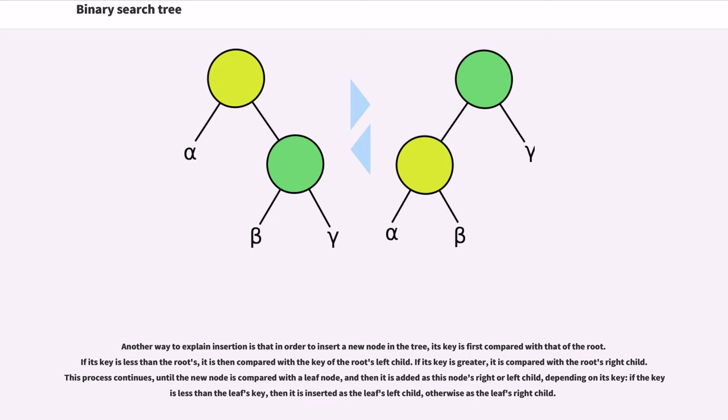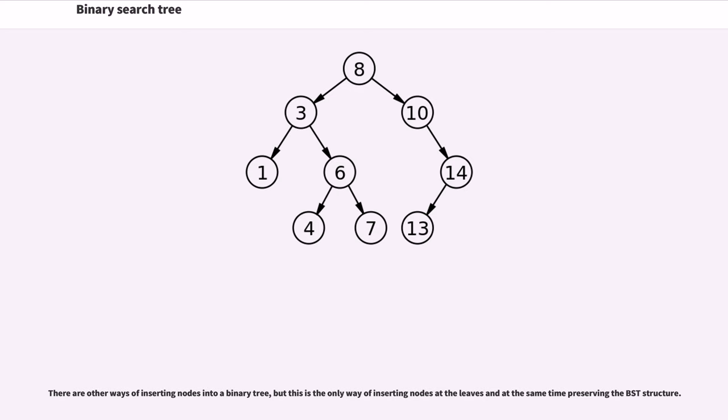Another way to explain insertion is that in order to insert a new node in the tree, its key is first compared with that of the root. If its key is less than the root's, it is then compared with the key of the root's left child. If its key is greater, it is compared with the root's right child. This process continues until the new node is compared with a leaf node, and then it is added as this node's right or left child depending on its key. If the key is less than the leaf's key, then it is inserted as the leaf's left child, otherwise as the leaf's right child. This is the only way of inserting nodes at the leaves and at the same time preserving the BST structure.